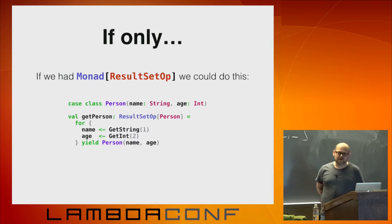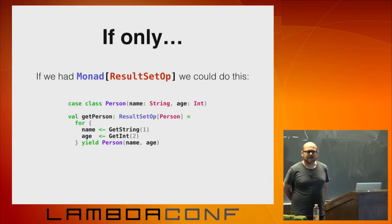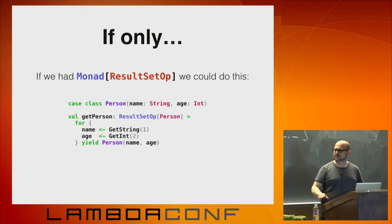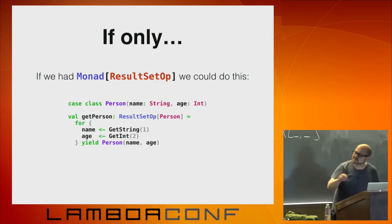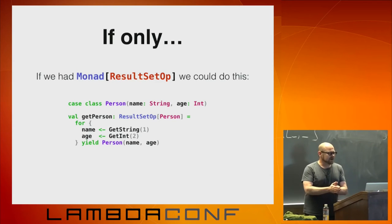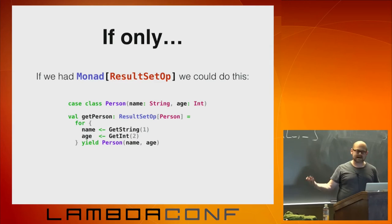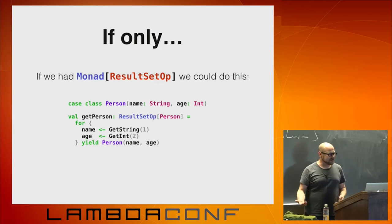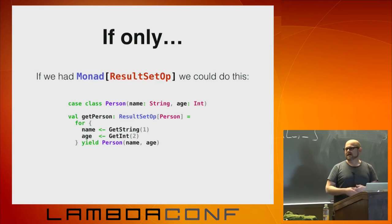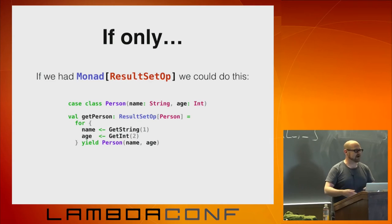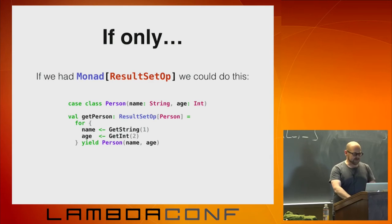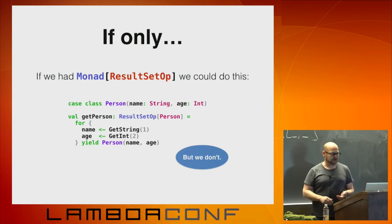If we had a monad instance for ResultSetOp — and I'm just assuming Scala everywhere — then we could write a program like: for a name produced by getString and an age produced by getInt, we can yield a person constructed from those values. We have no idea what this would mean because we haven't defined flat map or map or anything. But in any case we can't do this because we don't have a monad instance.